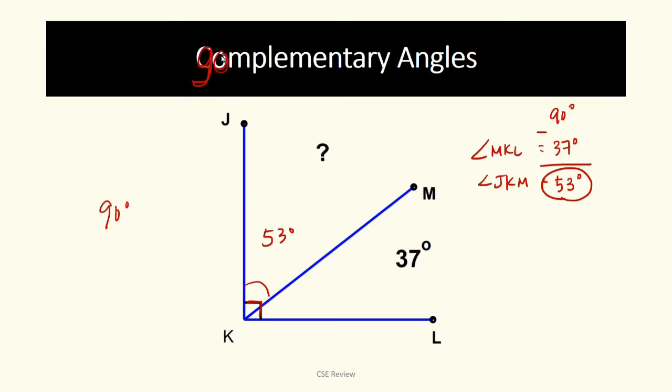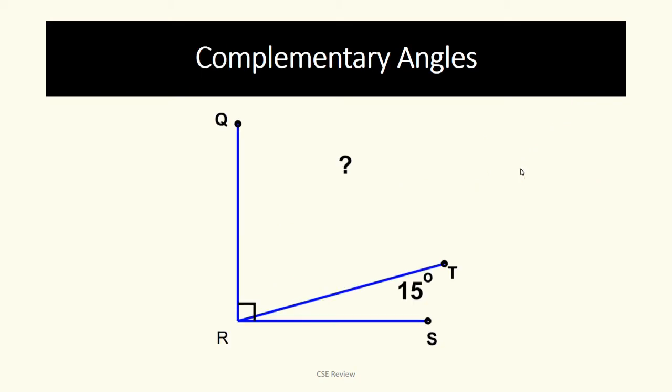I'm pointing out the names of the angles because sometimes in questions there's no drawing, just text like 'angles JKM and MKL are complementary angles. If angle JKM equals 53 degrees, what is angle MKL?' You have to be familiar with the terms. Now it's your turn—hit pause. Complementary angles sum to 90 degrees. Angle TRS equals 15 degrees. QRT equals 90 minus 15, which gives you 75 degrees. I hope you got that right.